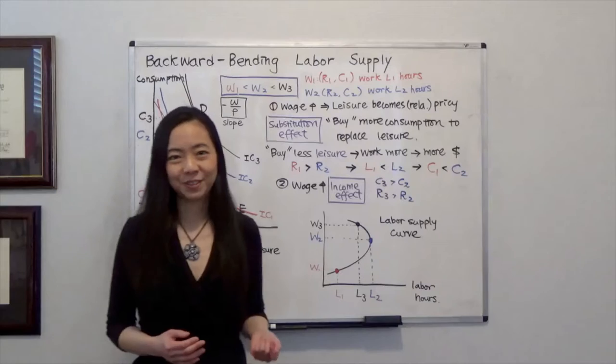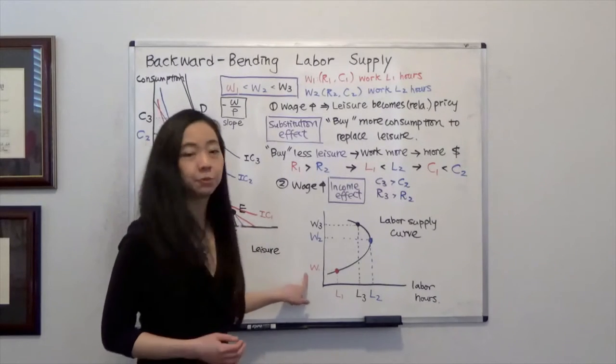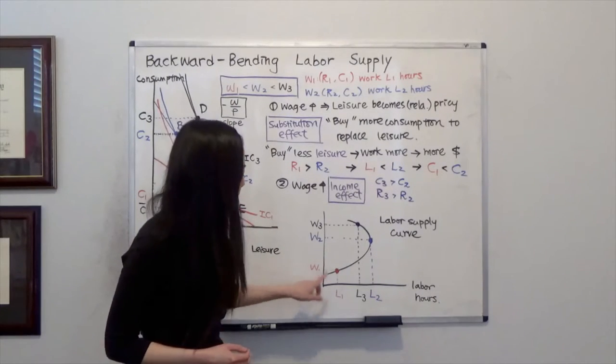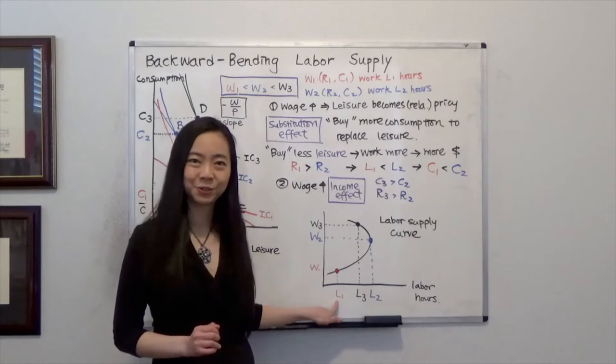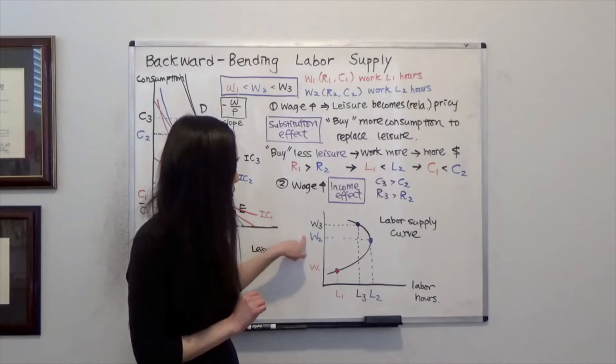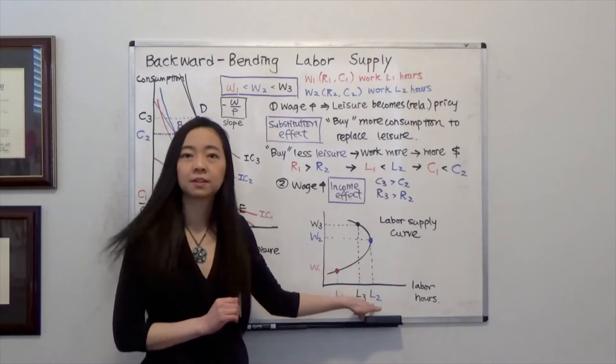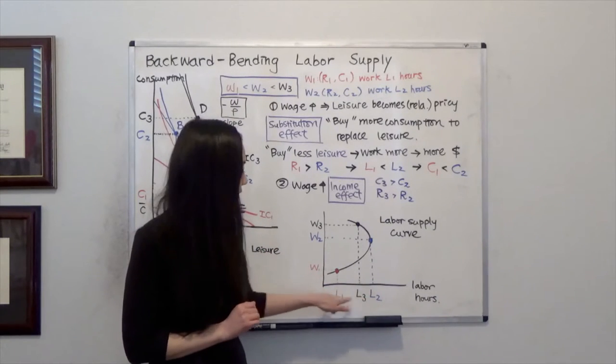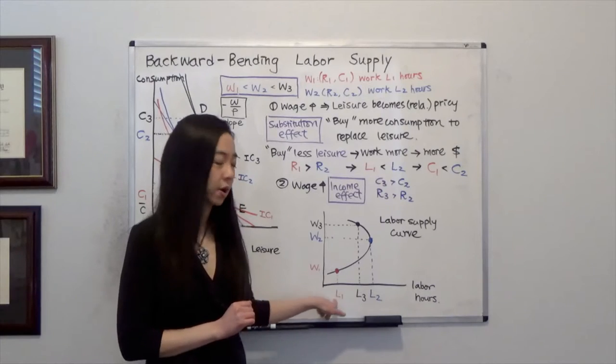Bottom line first, if your wage level is W1 the lowest, your labor supply is L1, so you work L1 hours. Now, if your wage rate increases from W1 to W2, you are going to work more hours, and the labor hours is going to increase from L1 to L2.